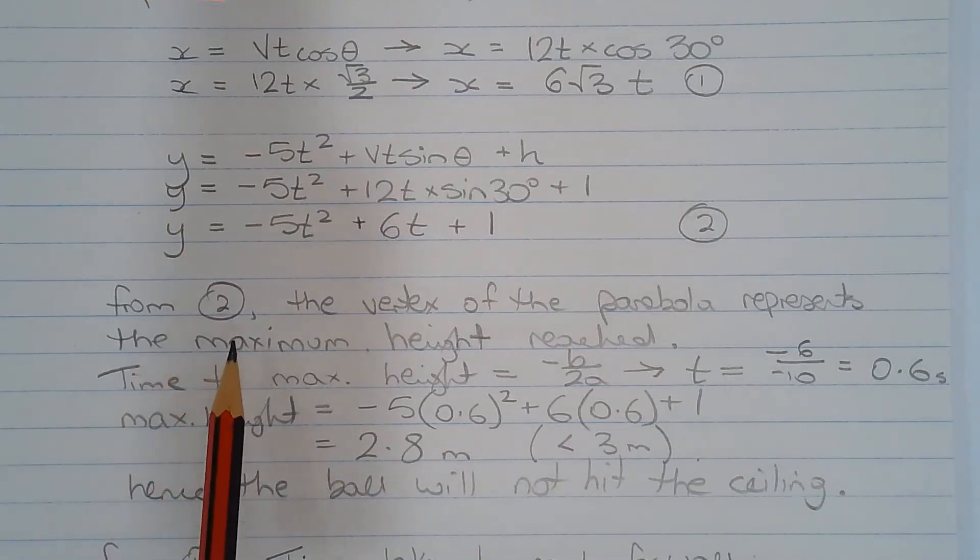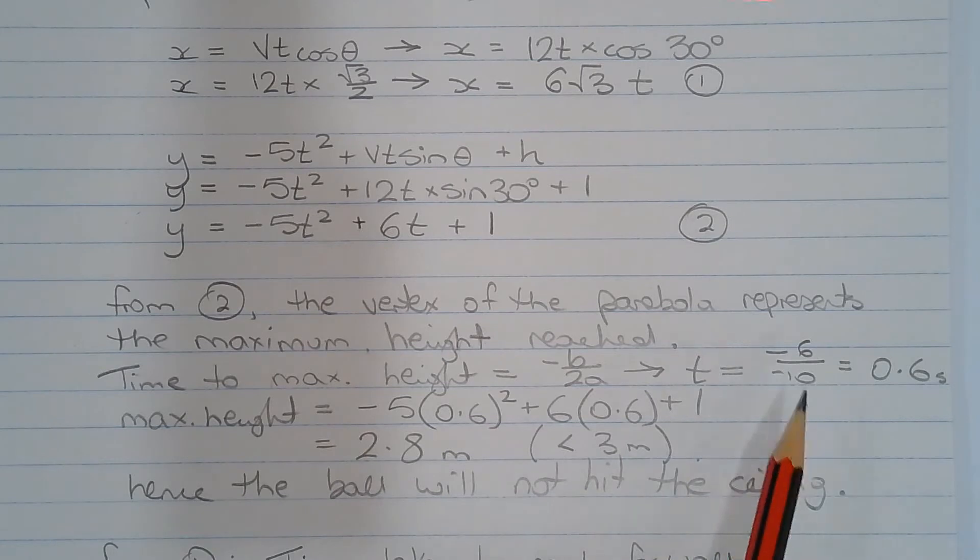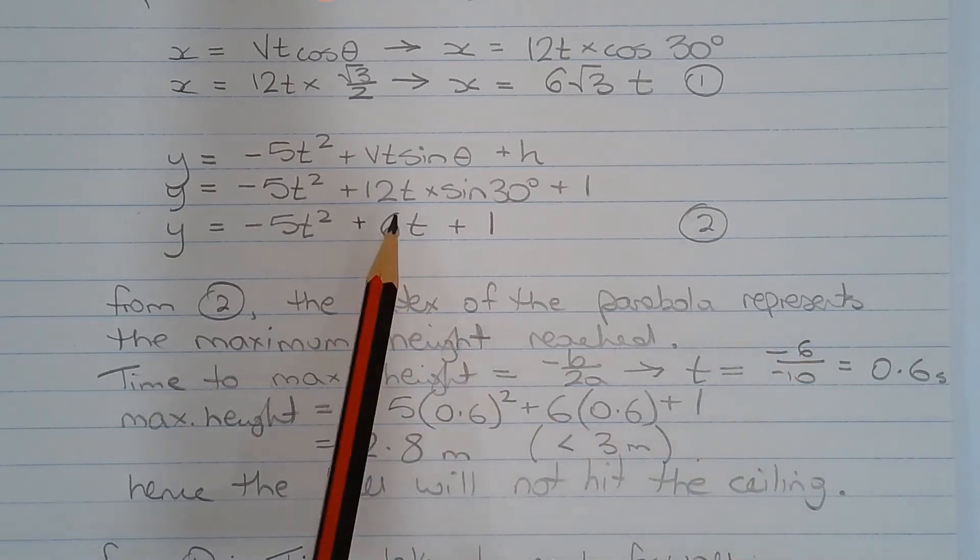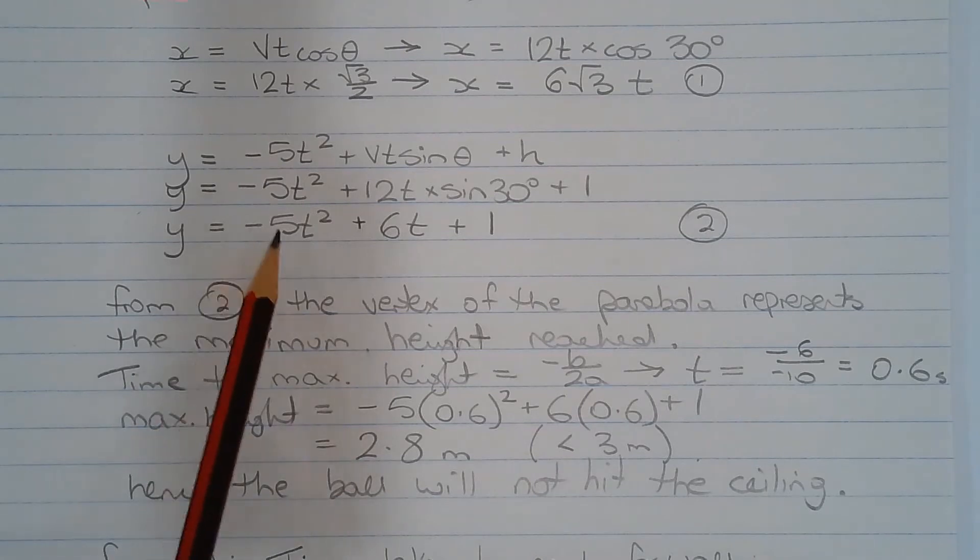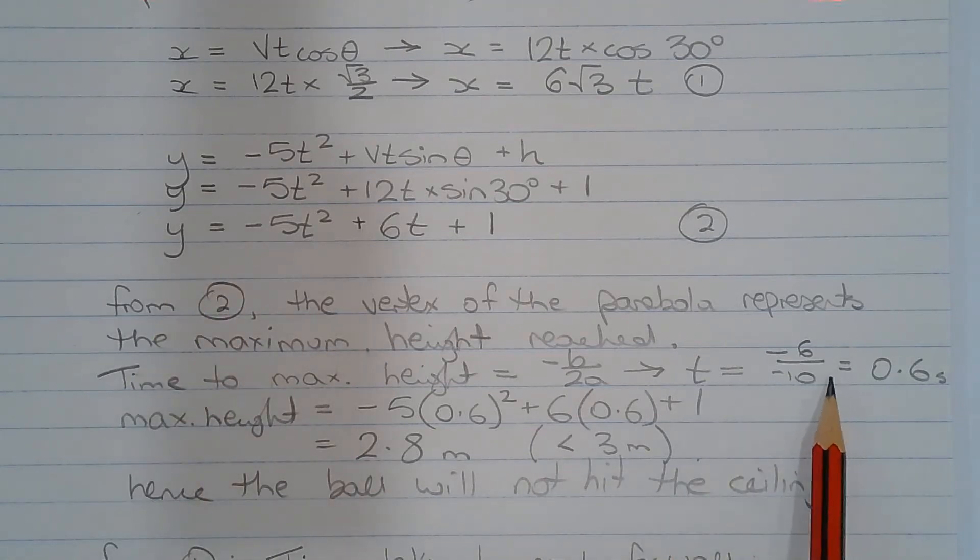Now from equation number 2, the vertex of the parabola represents the maximum height reached. So the time to maximum height is equal to negative b over 2a, where negative b is equal to negative 6. It comes from this coefficient there. And 2a is 2 times negative 5, which is negative 10. And that occurs at 0.6 seconds after projection.